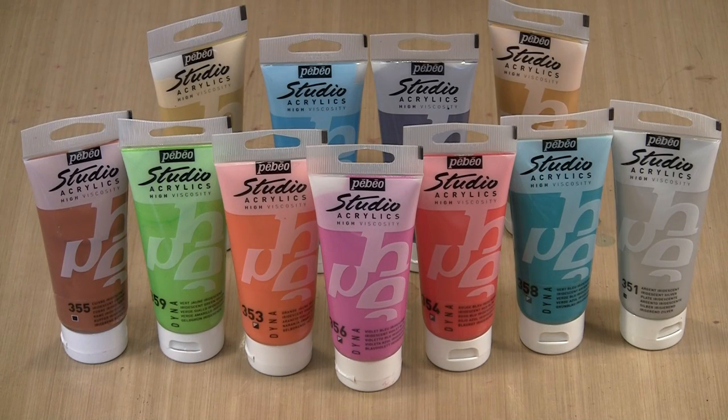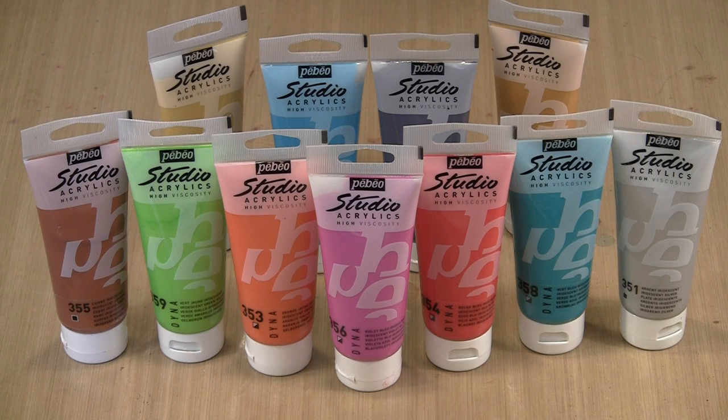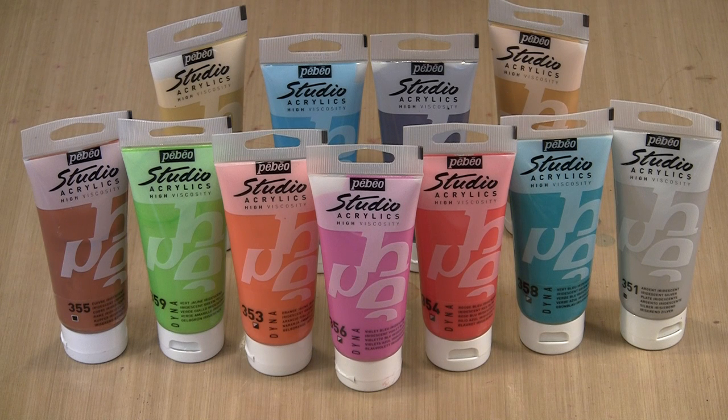I want to introduce you to Pebeo Studio Acrylics, and specifically the 7-Dyna and 4-Iridescent colors. These are heavy body paint, what Pebeo terms high viscosity, meaning it will hold whatever shape or thickness you apply it in. I'm really fascinated by these colors, and in today's video, I want to show you how awesome they are on the gel press plate.